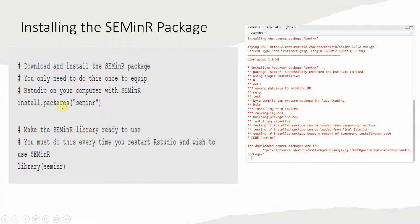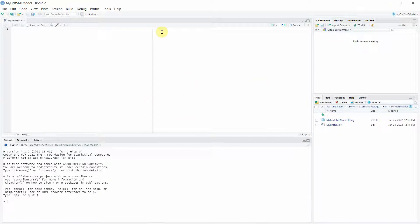Now, how do you install it? We've talked about this in the previous lecture as well. Just go to install.packages and write 'seminr' and this will install it. Otherwise you can do it from the Tools menu or the dialog box. Then you have to load the library — make sure you load the library otherwise you won't be able to use it. Since it's installed, let's load the library first. Here is a comment: 'loading the library'.